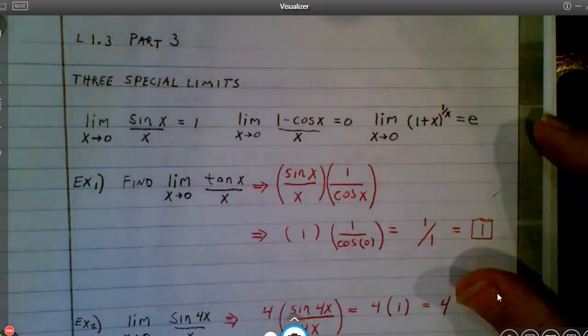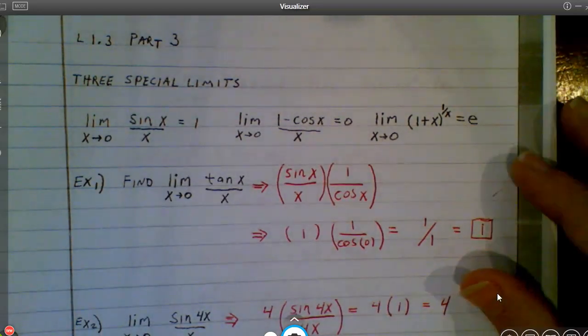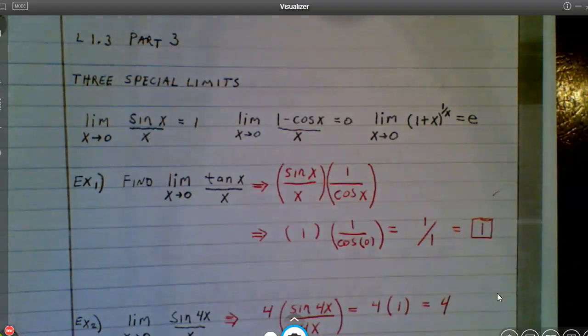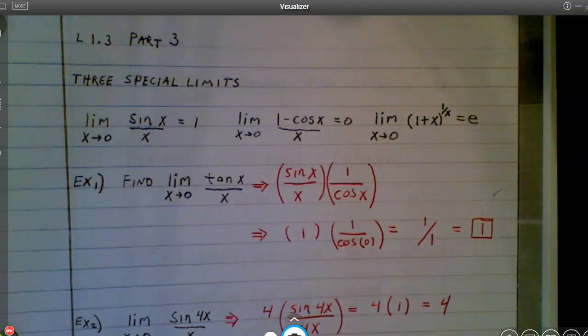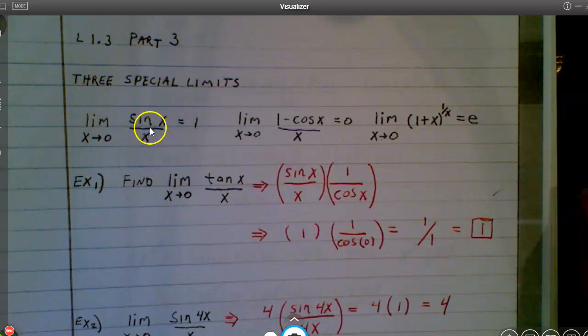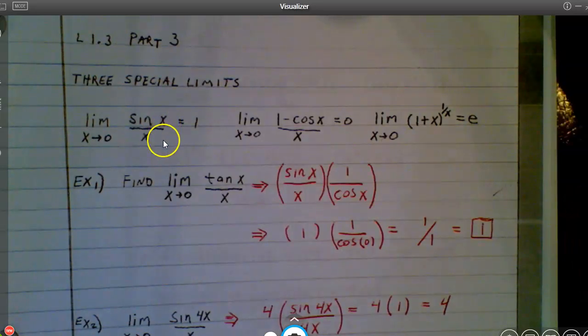Alright, here we go with part three of lesson 1.3. A couple special limits I want to show you. These are cases where you kind of need to just memorize these because you would not be able to do direct substitution. You can see on the first one, if I was to try to take the limit of this function as x approaches zero, I would not be able to plug a zero into this in order to do direct substitution because of that denominator.